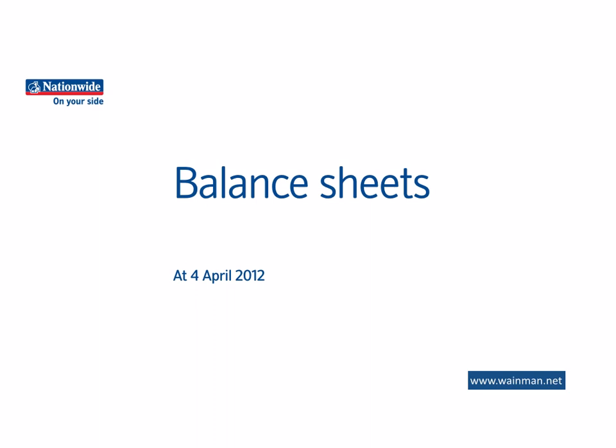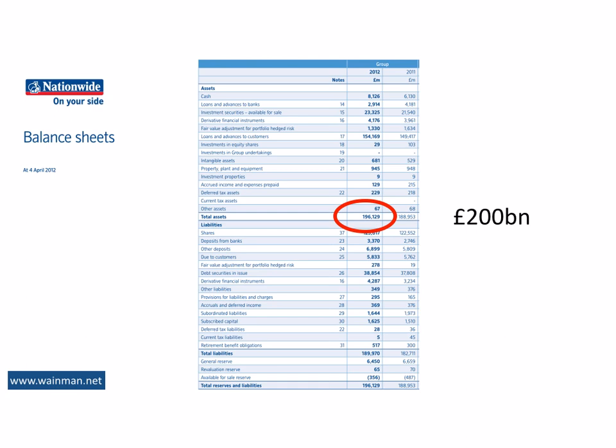Let's have a look at Nationwide's balance sheet for the year ended April 2012. Nationwide has assets of approximately £200bn. This is compared to Lloyds Bank, which has assets of approximately £1trn for the same period. So Lloyds Bank is about 5 times bigger than Nationwide. And for reference, the GDP of the UK is approximately £1.5trn.